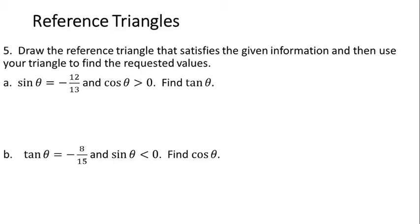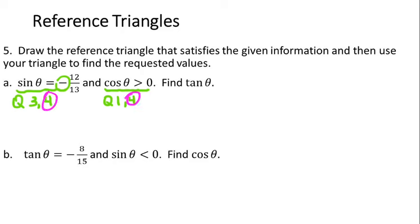On these reference triangle questions, the first question you really need to answer is which quadrant should we be drawing our triangle in, and which quadrant would we find the angle theta? For part A, they tell us that sine theta is negative 12 over 13, and what's really important is to note that sine is negative. Sine is negative in quadrants 3 and 4. They also tell us that cosine theta is greater than 0, which is true in quadrants 1 and 4. So the one quadrant where both of those things are true is quadrant 4, meaning our reference triangle needs to be in quadrant 4.